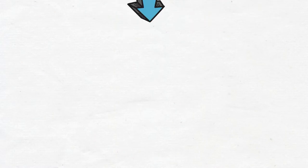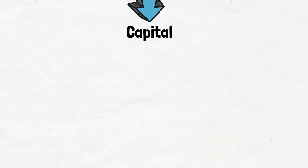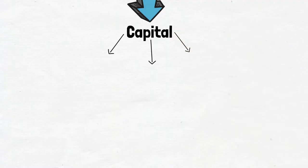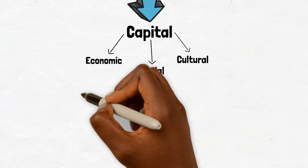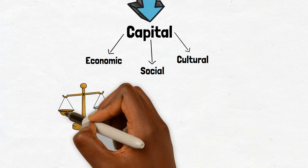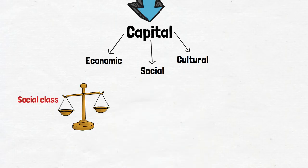Let's begin with the idea of capital. For simplicity, capital is something that a person might possess, and in sociology we can consider capital being split into three forms: economic, social, and cultural. These terms tend to come up most often when discussing inequalities, particularly with regards to social class, but they can also be applied to ethnicity, age, and gender inequalities.